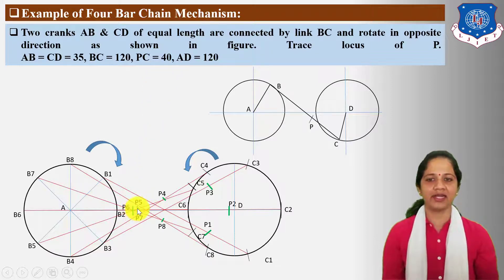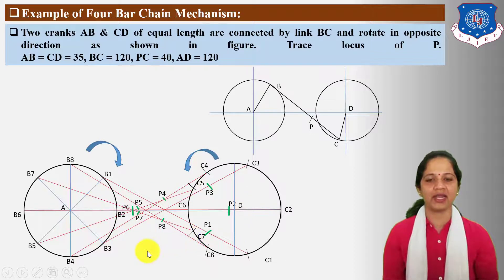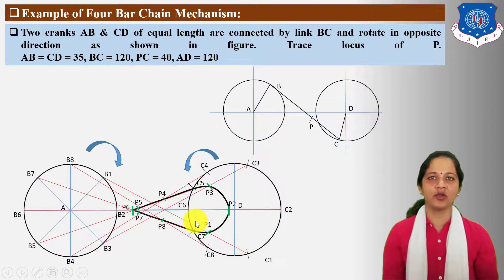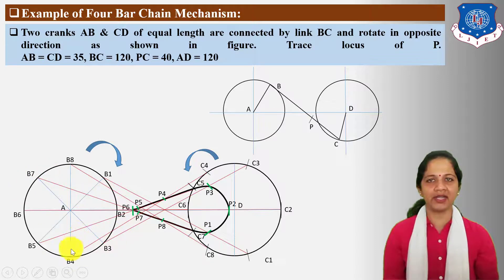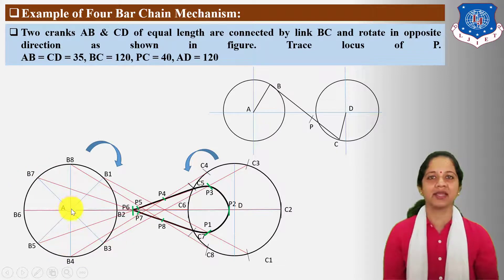Next, connect all locus points P1 to P8 freehand in the form of a curve. This indicates the locus of point P for one complete revolution of driver crank AB.